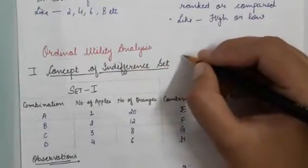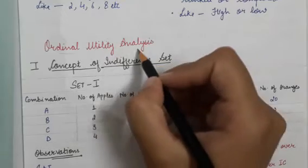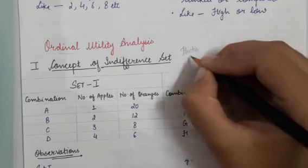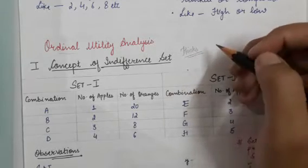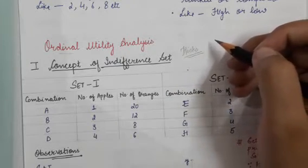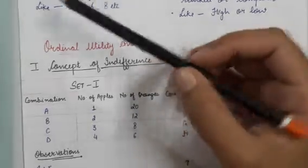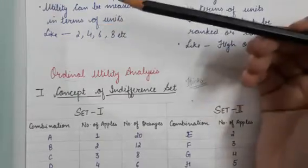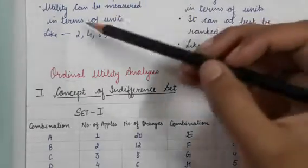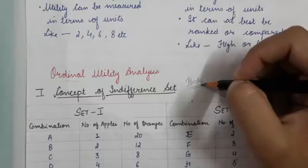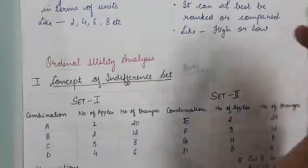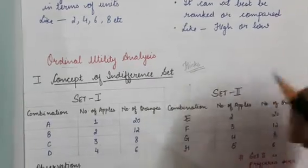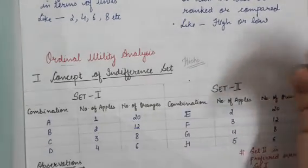Starting with the chapter on ordinal utility analysis — who was the economist who criticized Marshall? Marshall used to say the concept is cardinal; we can use imaginary units to measure utility. But Hicks said it can't be done that way — we can only compare two combinations to tell which one is better or gives more utility.